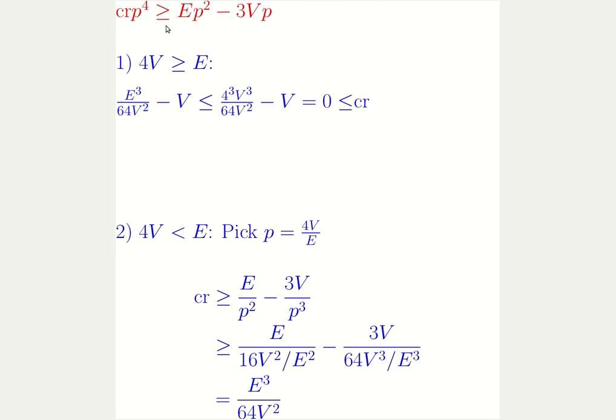By dividing both sides of this inequality that we derived from the previous slide by p to the 4, we get the following inequality. And then we plug in the value of p and after simplification, we obtain that the number of crossings is at least E cubed divided by 64 times V squared. And thus, this proves our lemma.